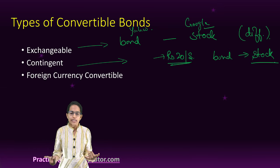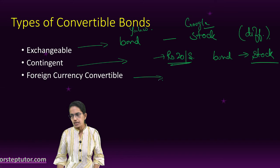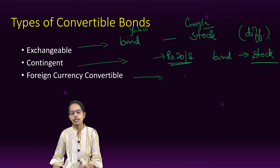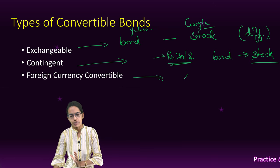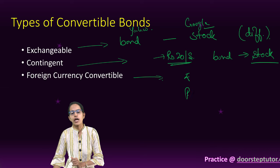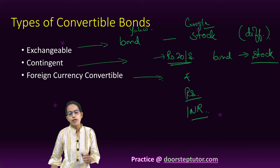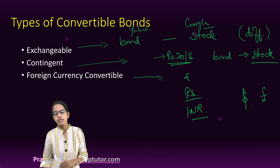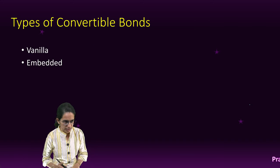The next is foreign currency convertible. Foreign currency convertible means you have an option to convert it into denominations other than the issuing country's currency. So, if it's issued in India, the currency is INR or rupees, but you have an option to convert it into dollars, pounds, yen, or whatever currency is available.